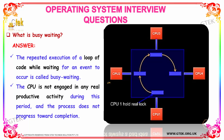What is busy waiting? The repeated execution of a loop code while waiting for an event to occur is called busy waiting. The CPU is not engaged in any real productive activity during this period and the process does not progress toward completion. Hence, busy waiting is waiting for an event to occur by executing a loop.